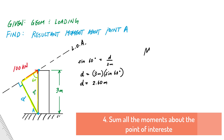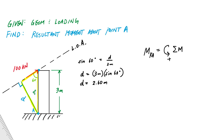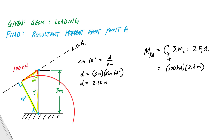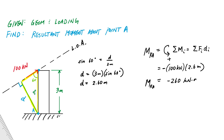Knowing d = 2.6 m, I calculate the resultant moment about A. Using the 2D sign convention — counterclockwise positive — with one force and one distance: 100 kN × 2.6 m, and it causes a clockwise effect about A. So the moment is −260 kilonewton-meters, or 260 kN·m clockwise.